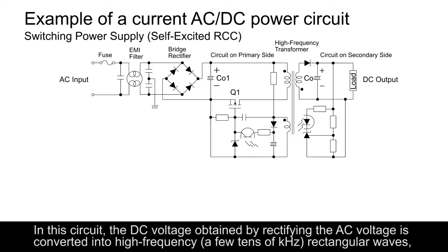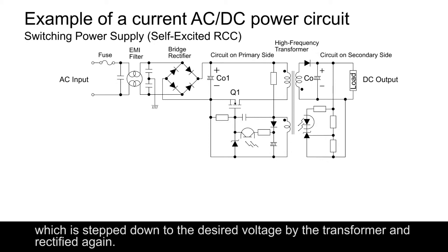In this circuit, the DC voltage obtained by rectifying the AC voltage is converted into high frequency — a few tens of kilohertz — rectangular waves, which is stepped down to the desired voltage by the transformer and rectified again.